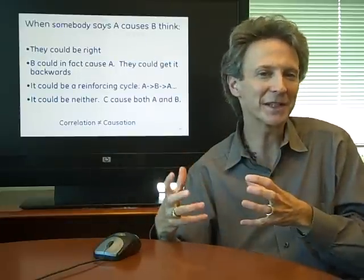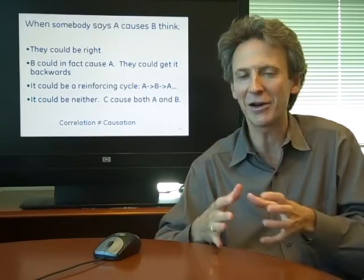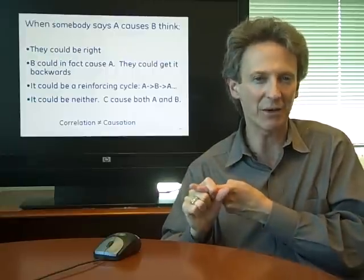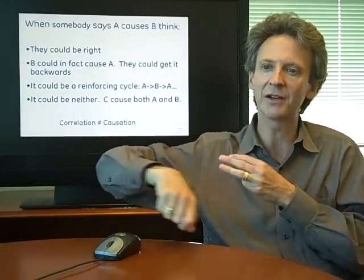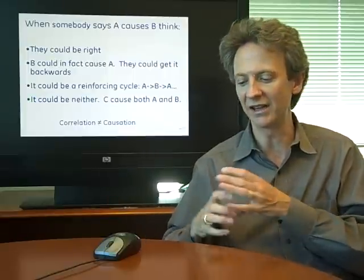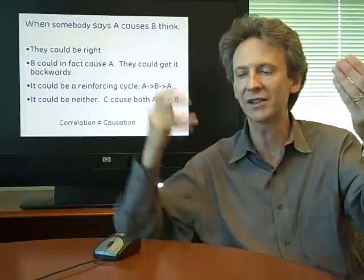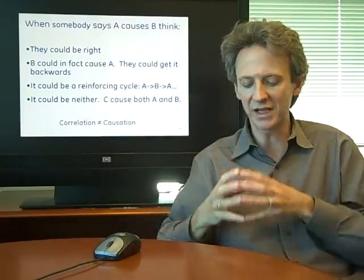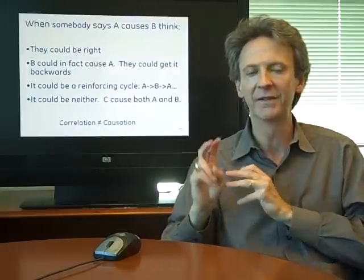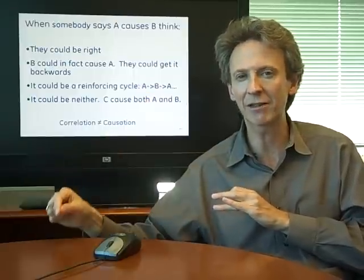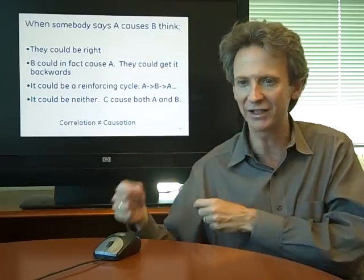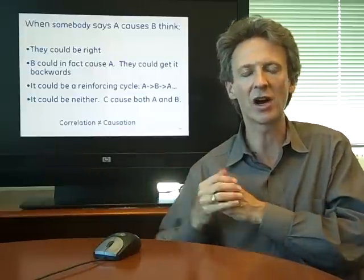It's a little simplistic, but a lot of people get this wrong. They'll say A causes B, but you need to think about whether they're actually right. They could be right — for sure. B could cause A; they could have it exactly backward. It could be a reinforcing cycle where A does cause B but B also causes A — a virtuous or vicious cycle. And lastly, a lot of people mix up the common cause situation where A doesn't cause B — they may be correlated and look related, but there's something else causing both: some C that's causing both A and B. Just because two things are correlated doesn't mean they're a cause and effect. You need to understand the process, the biology, the underlying science — what is actually going on beyond just the statistics to prove cause and effect relationships.